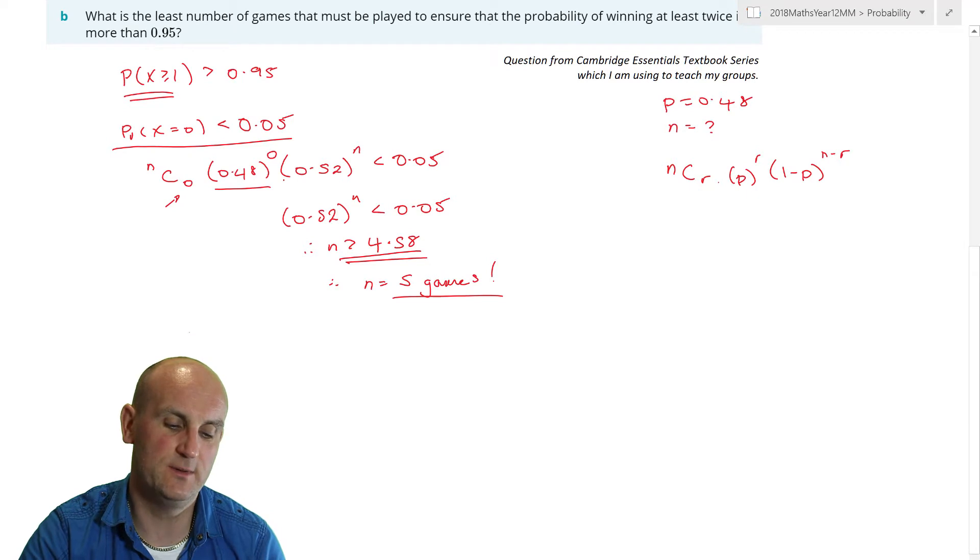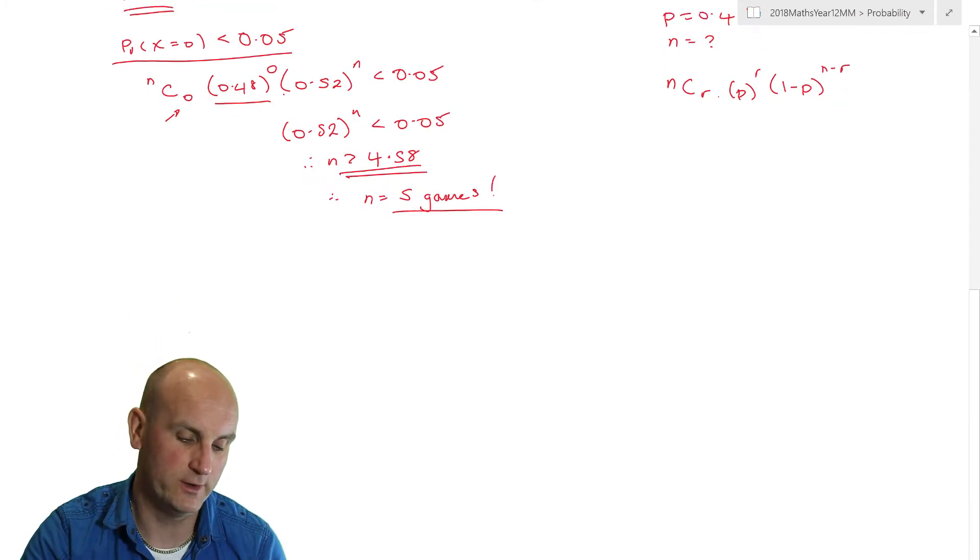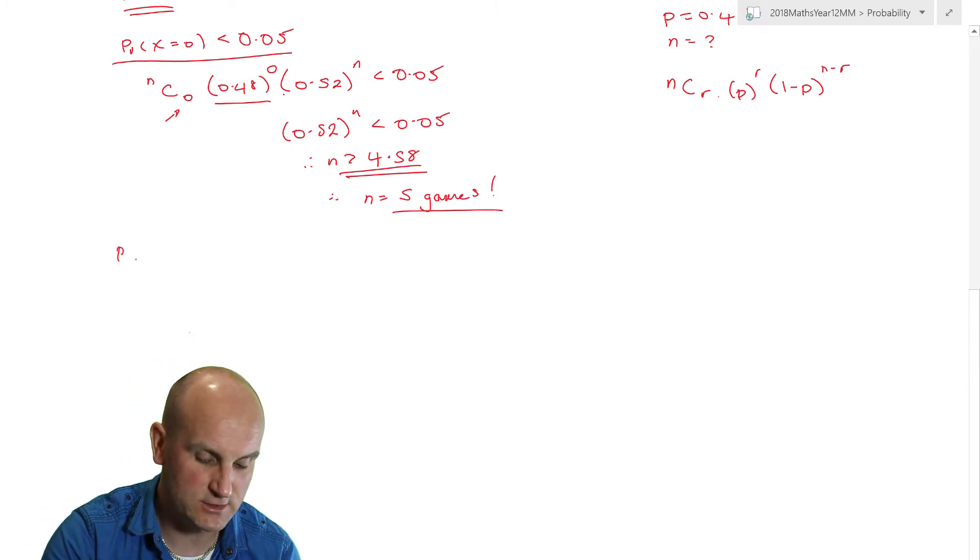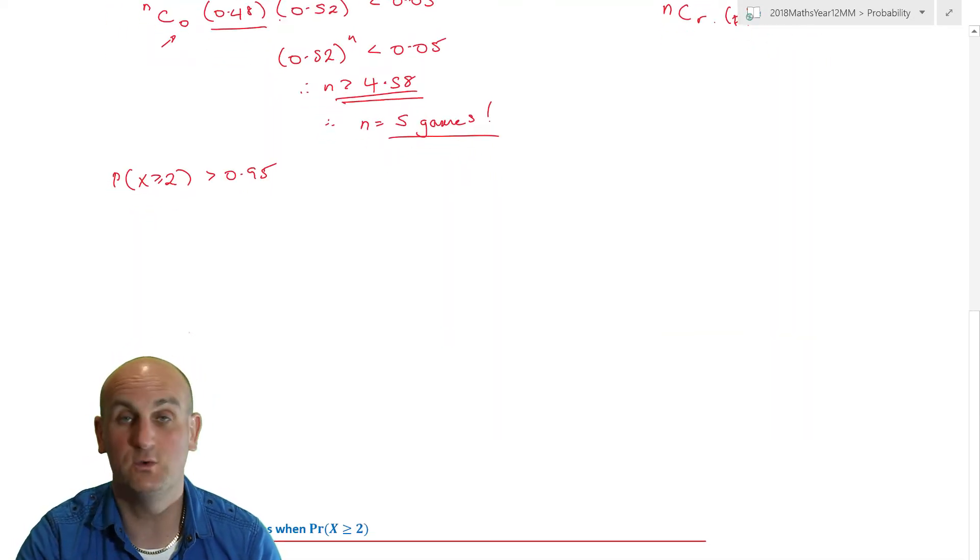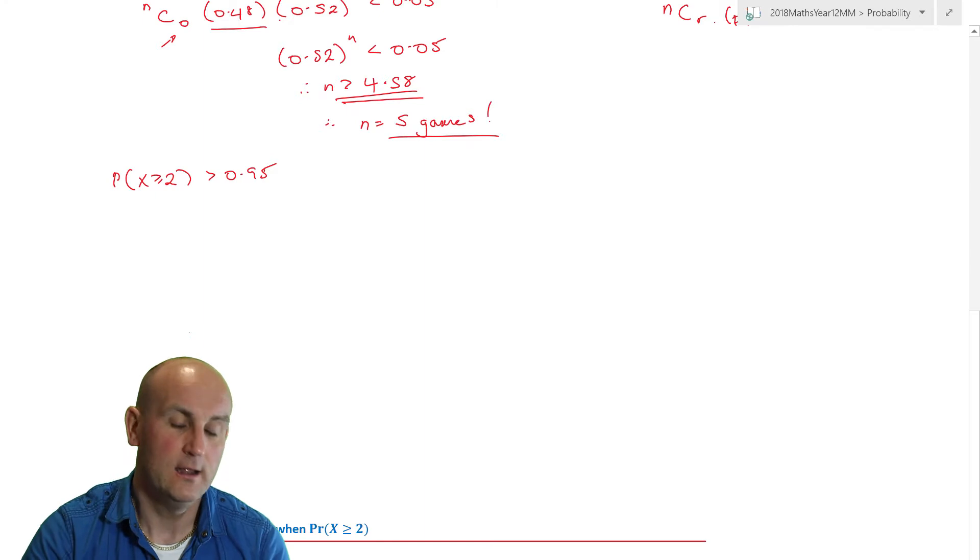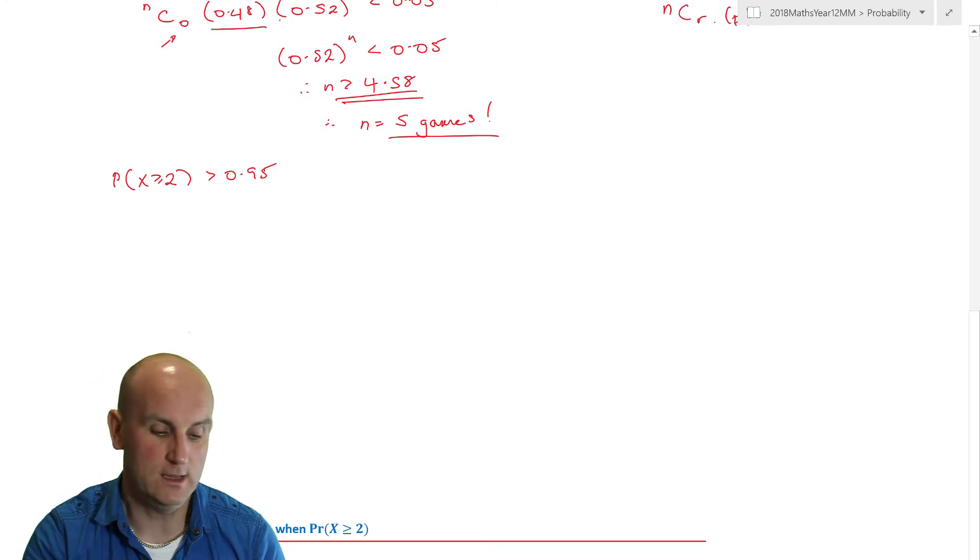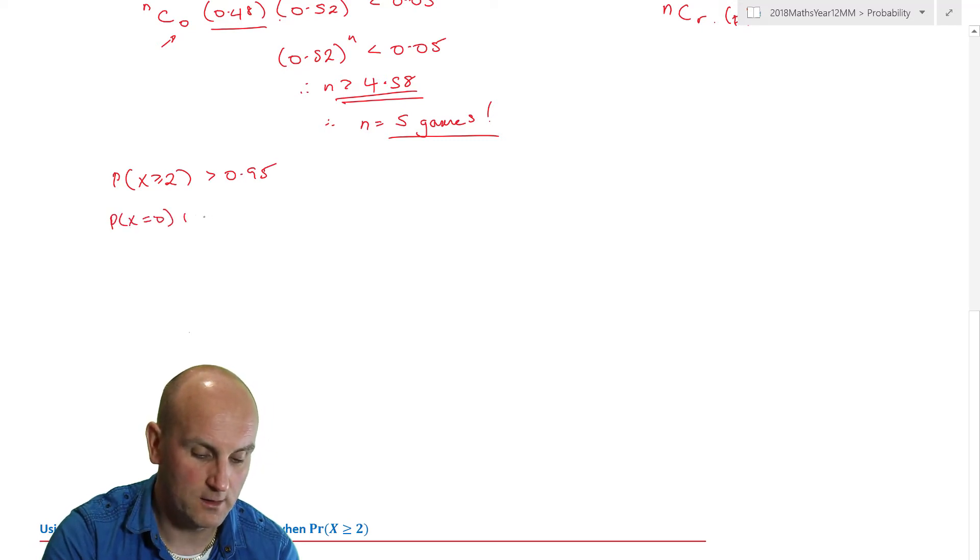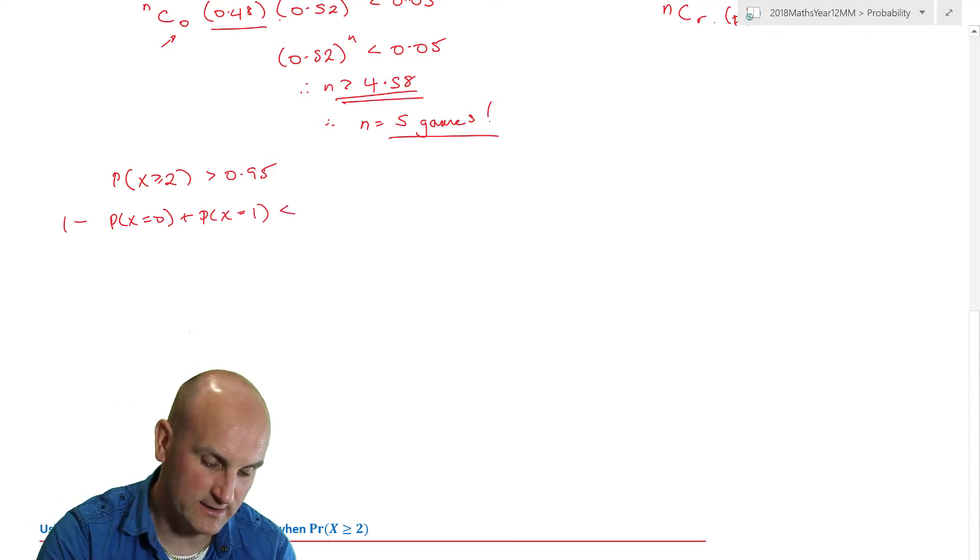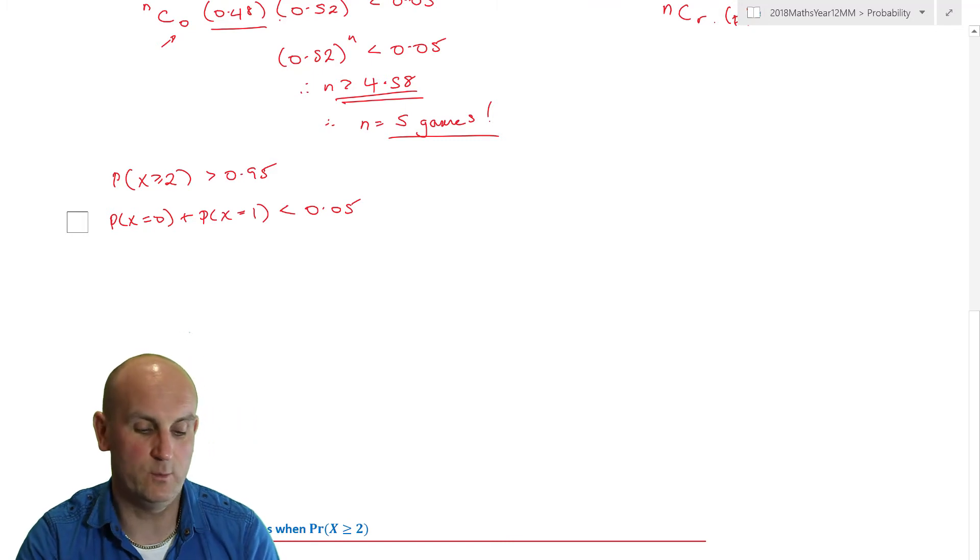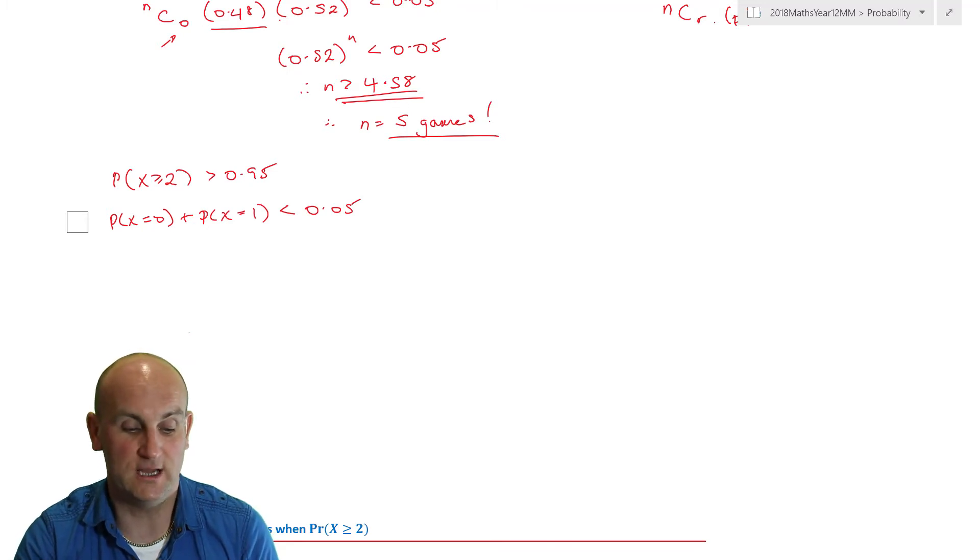What about the least number of games that must be played to ensure the probability of winning at least twice is no more than 0.95? So they're just slightly changing it. So in this situation I want the probability that X is greater than or equal to two is greater than 0.95. And again it's a trick. Now whenever you see these twice, there are two ways of doing it. Think of it in reverse. Greater than or equal to two is the same as the probability that X is equal to zero plus the probability X is equal to one taken away from one. So I now know that X equals zero and X equals one should be less than 0.05.